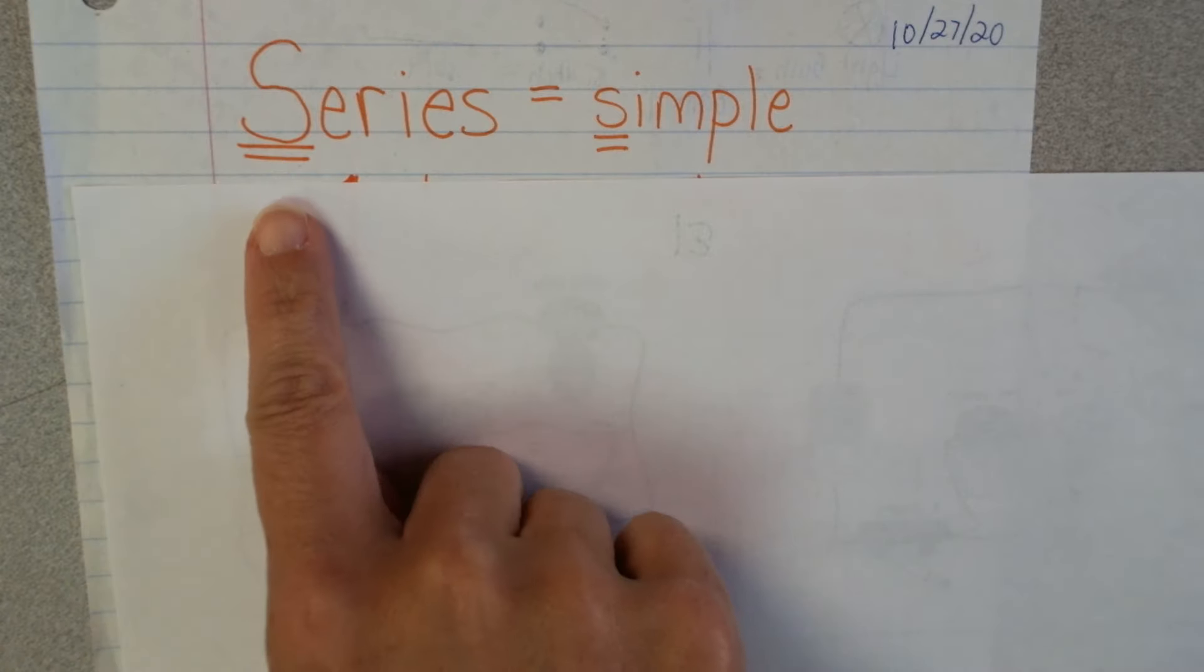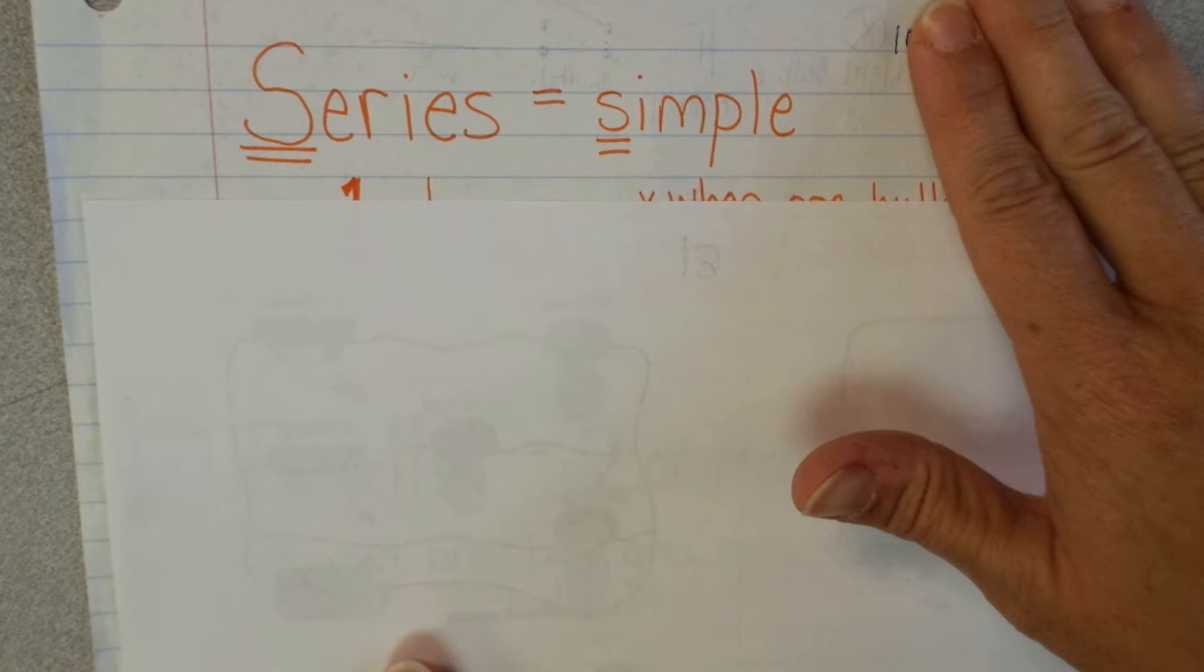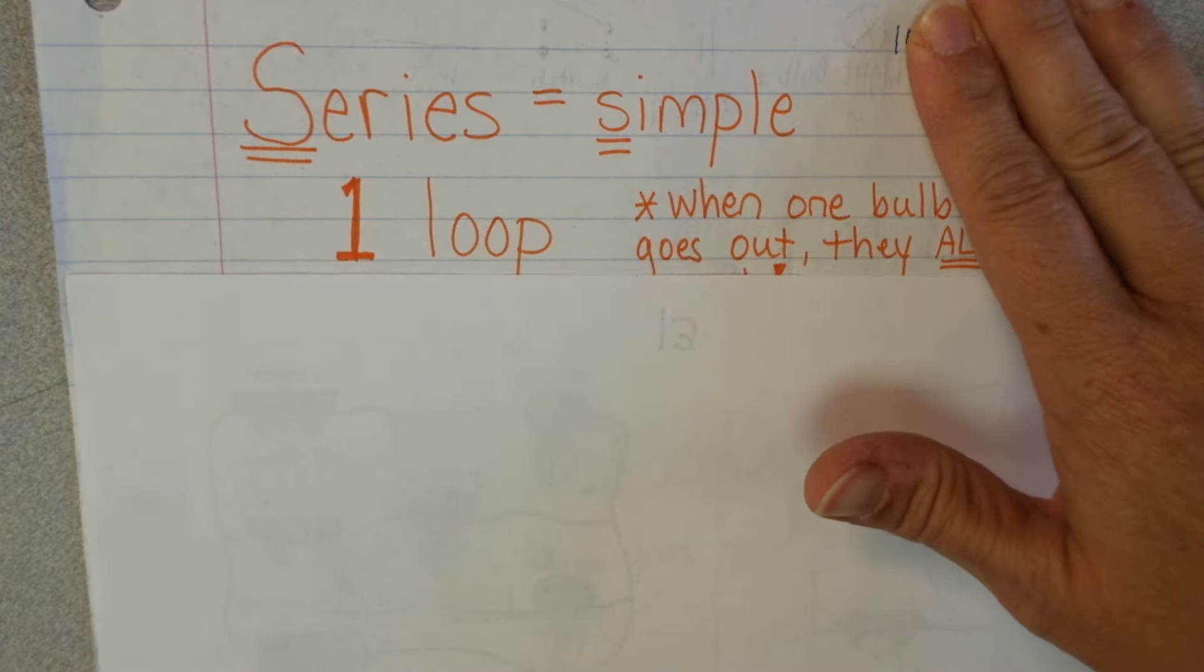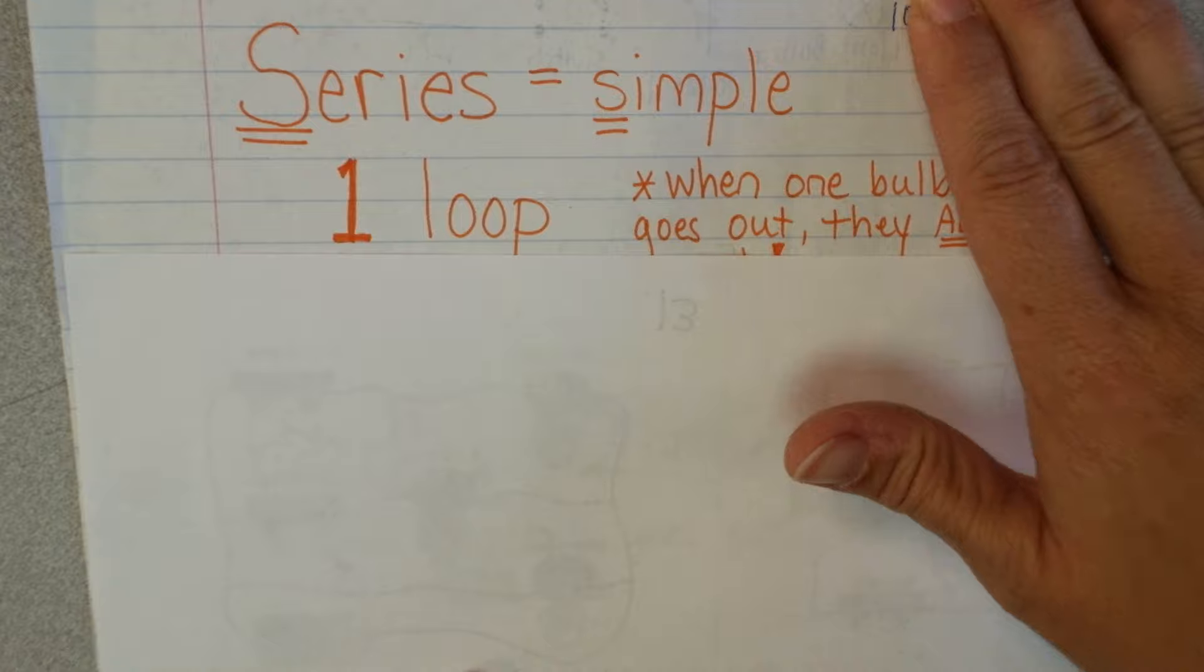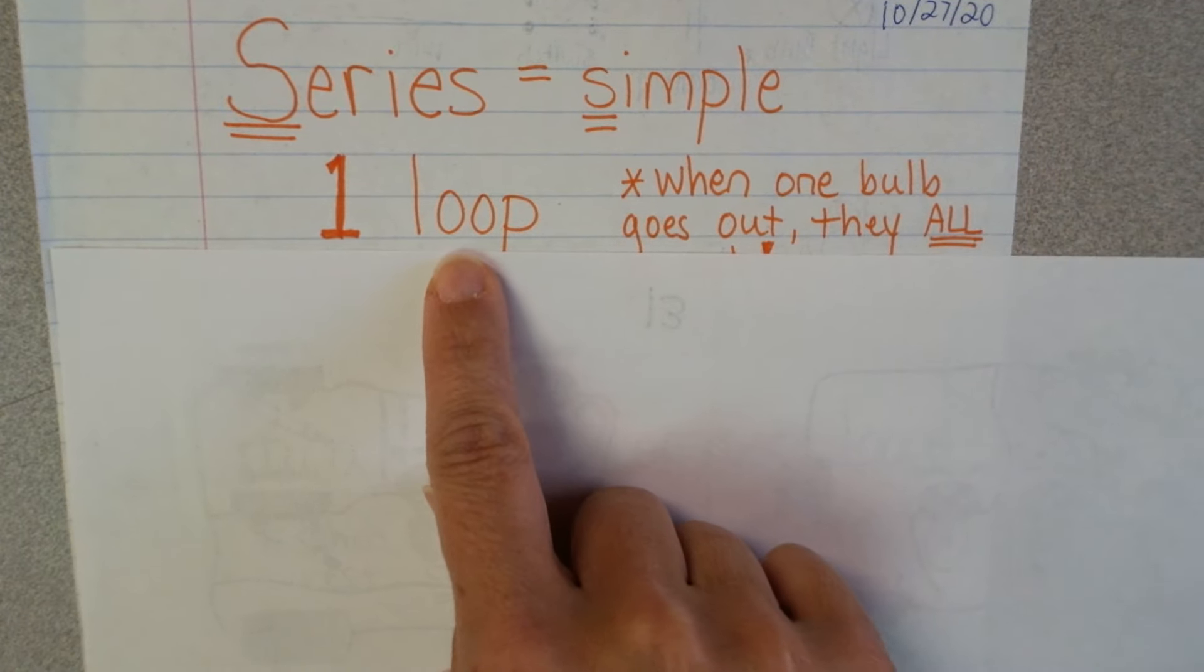So in order to remember this, an easy way to do that is we know series starts with an S, so if you think of that S as always meaning simple, that means it's only going to have one loop of electricity, or one loop in the circuit.